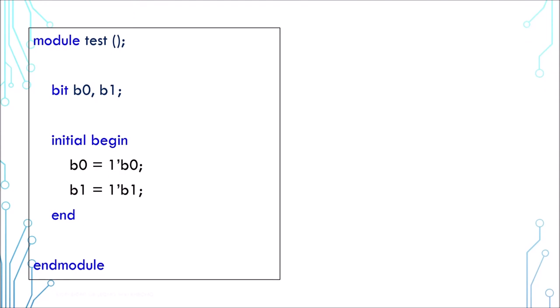Let's start with something we are familiar with. There are two bits, b0 and b1 in this simple code. And then in the initial block, they are assigned to 0 and 1 respectively.